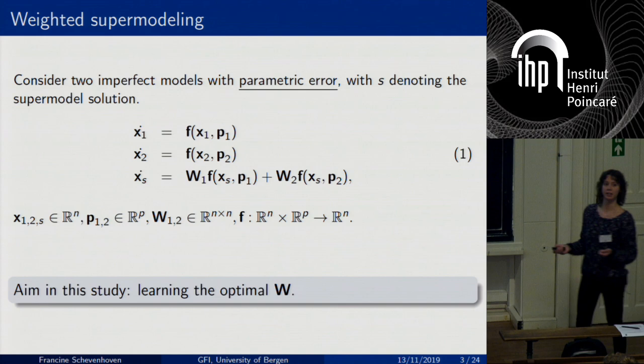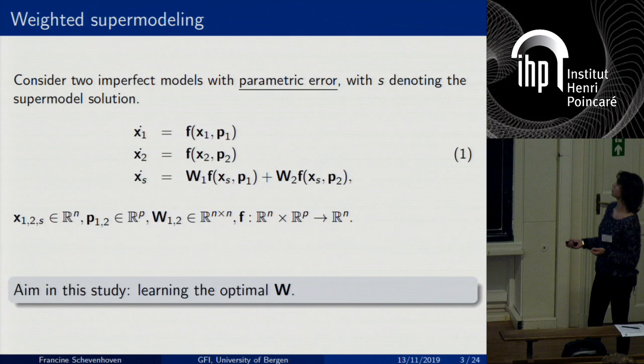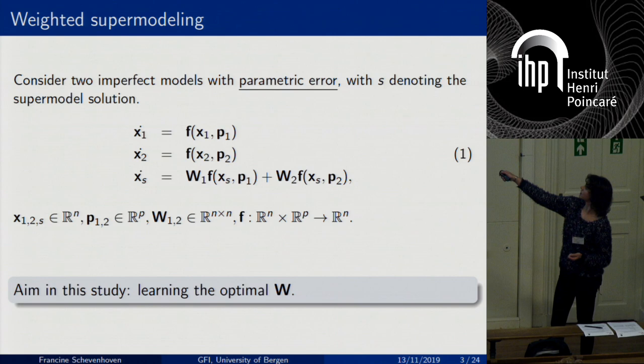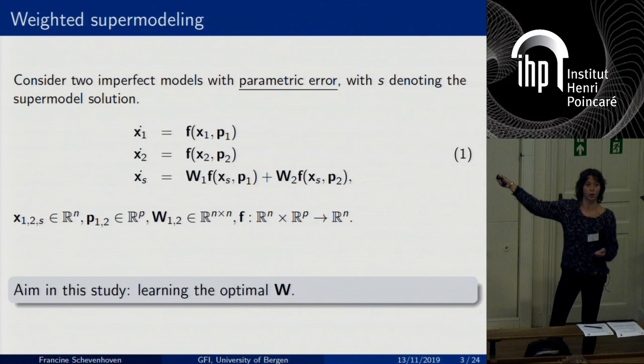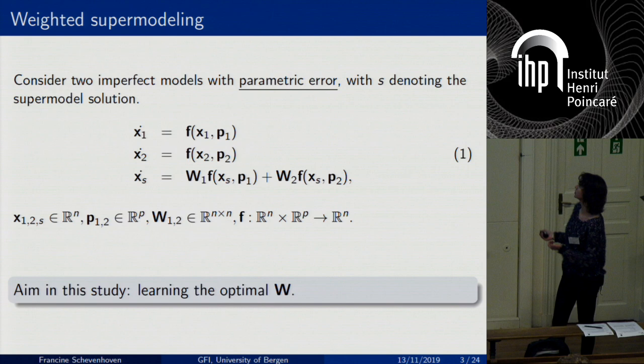How does the supermodel look? I work with weighted supermodels. If we have a couple of imperfect models with their time derivatives denoted, my supermodel is just a weighted superposition of the time derivatives of the imperfect models. I want to get the supermodel as optimal as possible, meaning the most optimal weights W. My aim is to train these weights W.